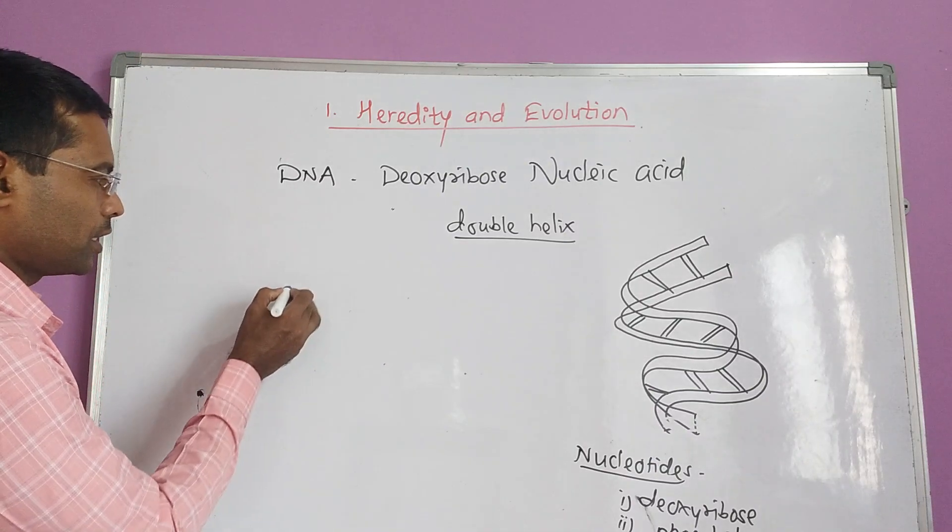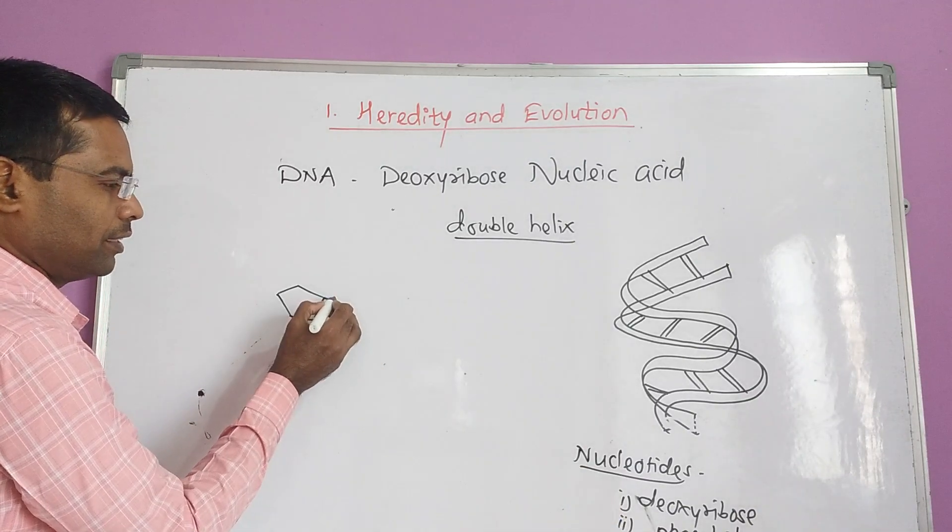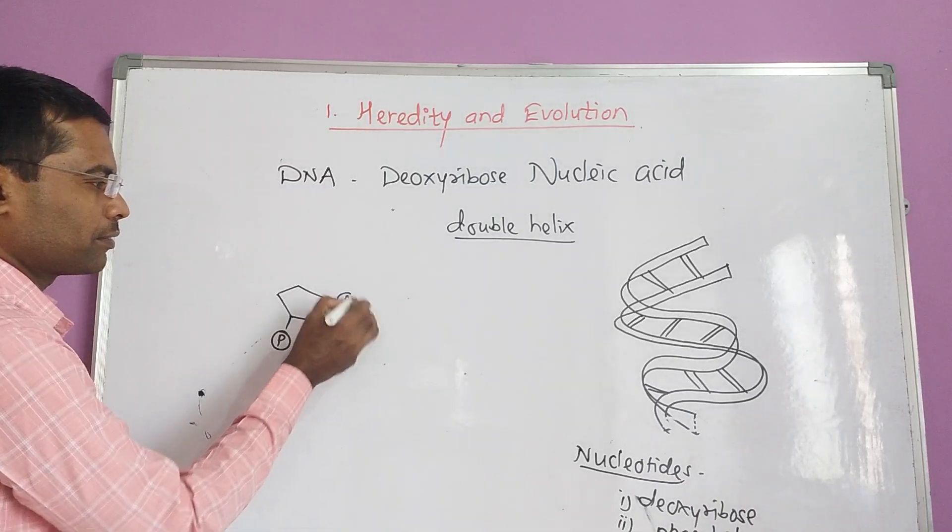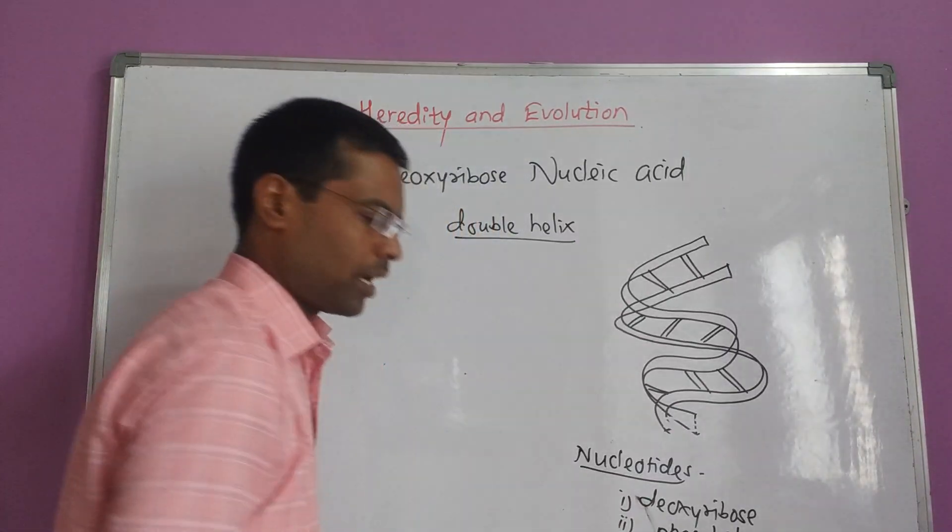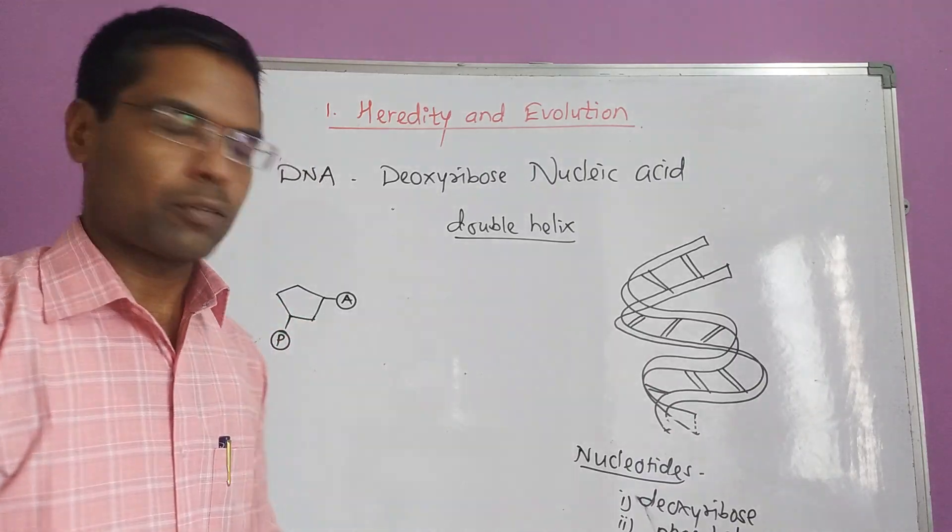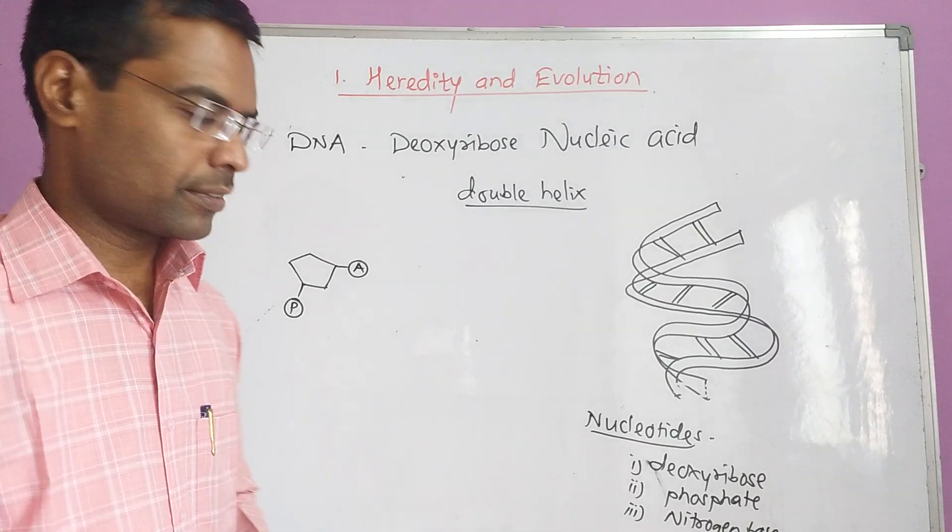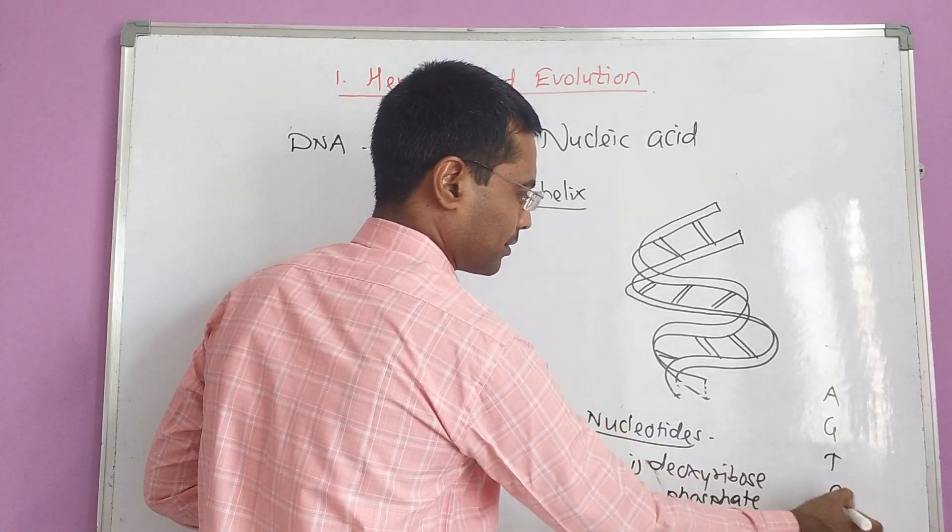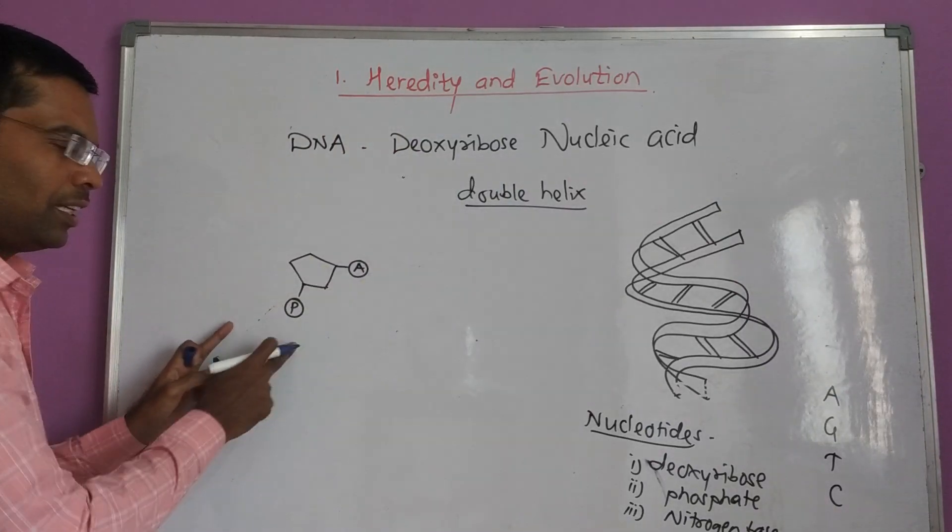I am drawing the structure of nucleotide now. See, this is here the deoxyribose sugar. This is here the phosphate ion. And another third is the nitrogen base, which is of four types. That is the adenine, guanine, thymine, and cytosine. Out of this, adenine means A, guanine G, thymine T, cytosine C. And out of this, there is only one here. So this is single nucleotide.